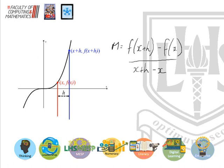I'm not going to take you through the whole proof, but essentially what they found was something brilliant. Using more complicated mathematics techniques including limits, as they made h closer and closer to zero, they found that if you started off with the curve f(x) = x², the formula for the gradient became 2x.